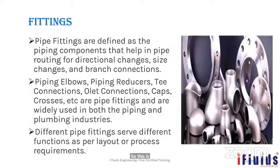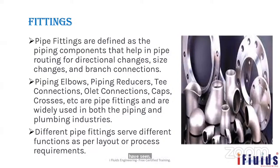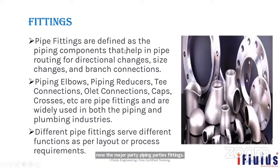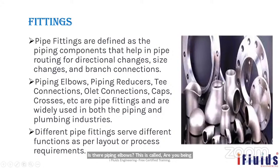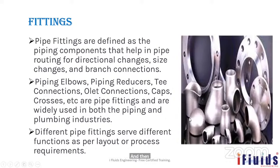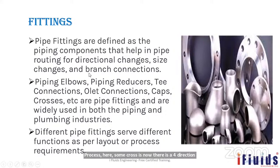The next major piping component is fittings — a common term covering different types: piping elbows, reducers, OLET connections, caps, crosses, and couplings. Fittings help in pipe routing for directional changes, size changes, and branch connections. Commonly used fittings are elbows, 180-degree bends, tees, crosses, caps, reducers, flanges, and couplings.